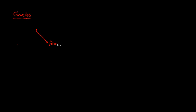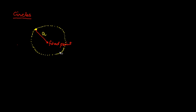In this video, we are going to talk about circles. Let us see what a circle is. A circle is a locus of a point which moves in such a way that its distance from a fixed point is constant. This point will move in the plane R² such that its distance from the fixed point is always constant. The locus traced by this curve is called a circle.